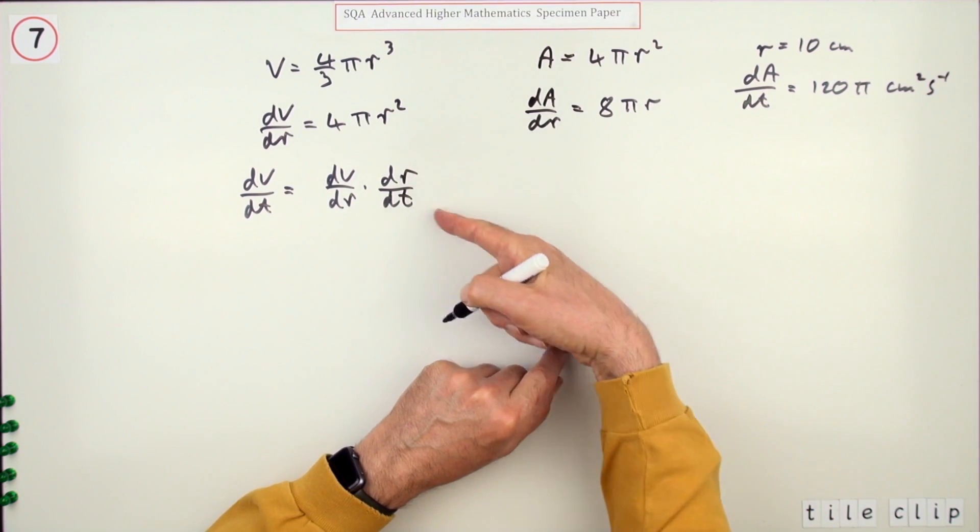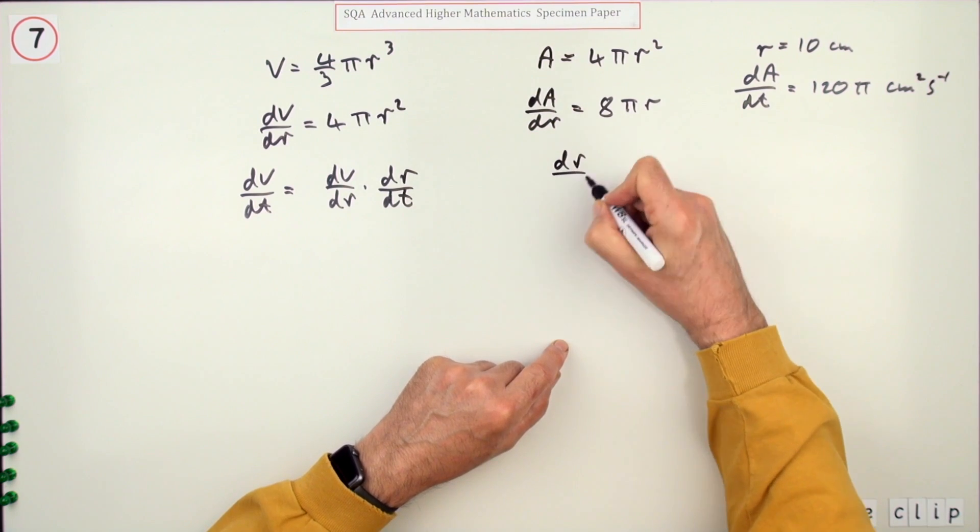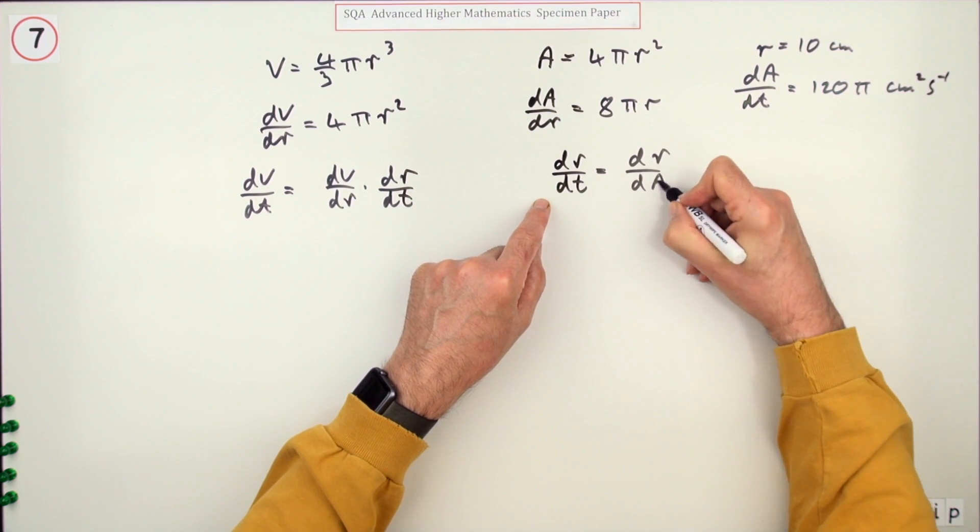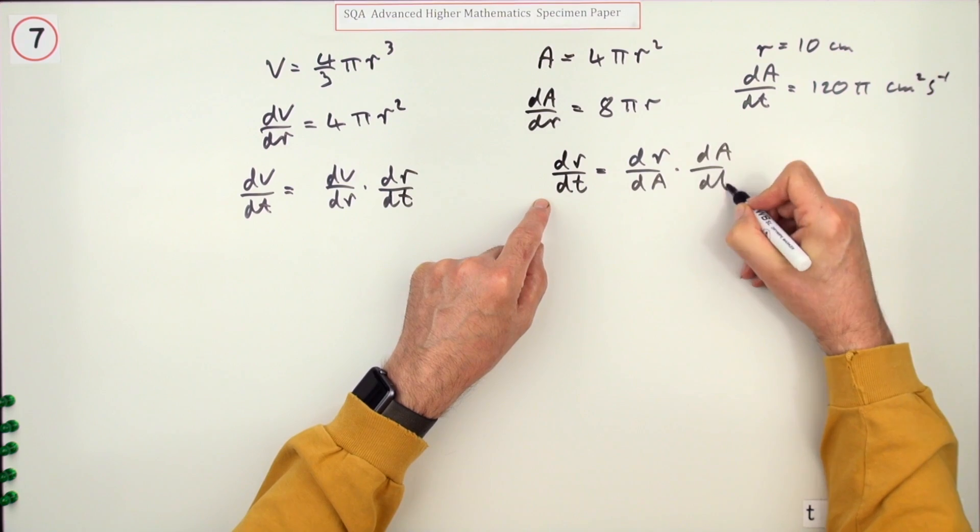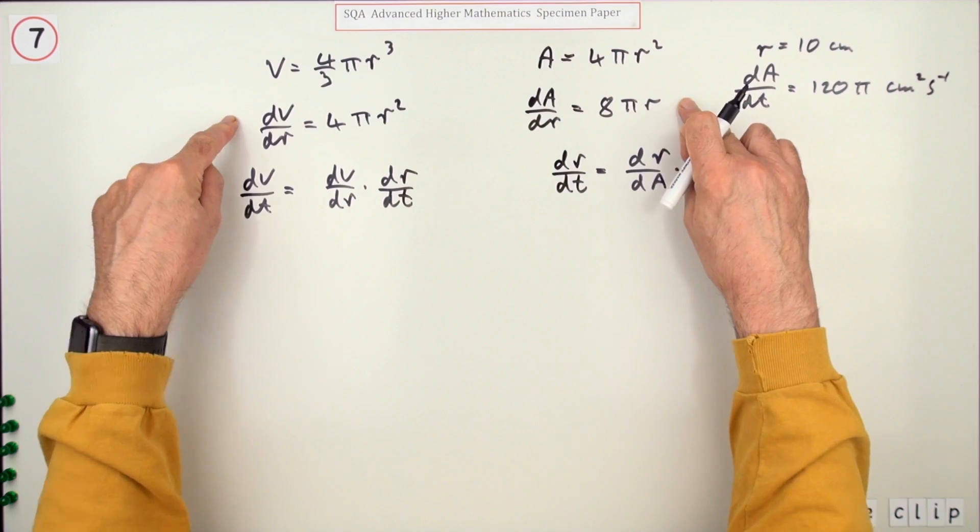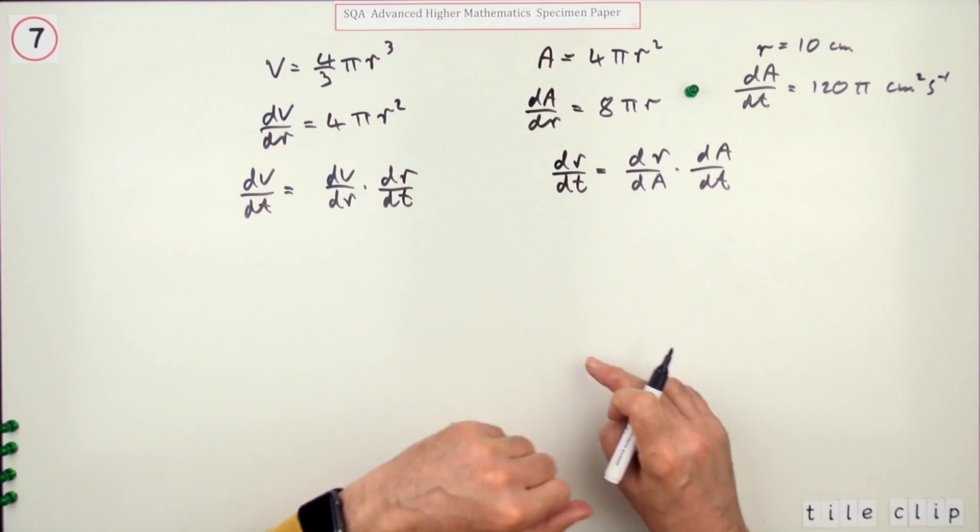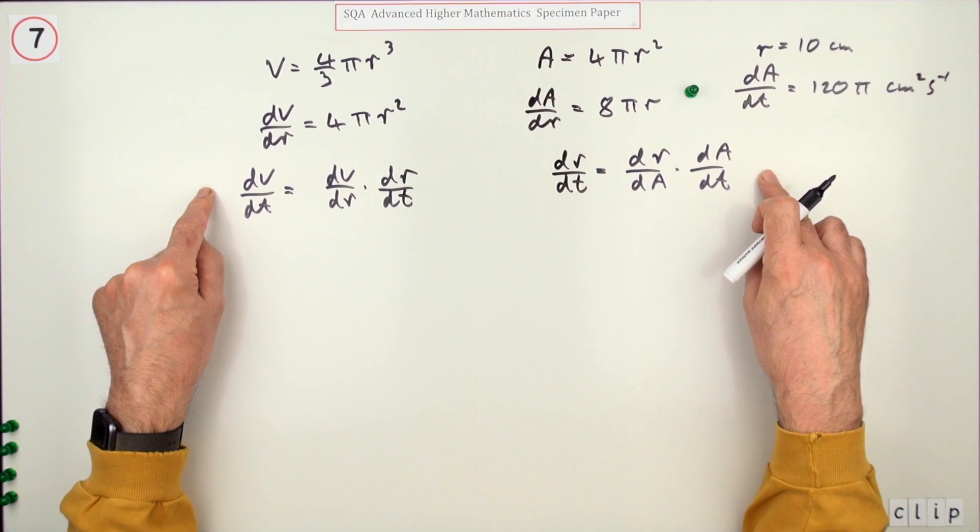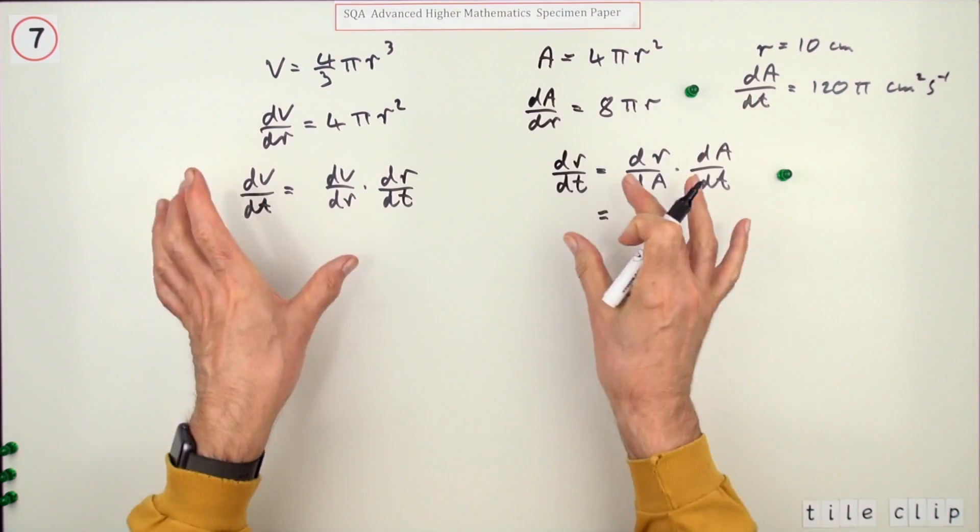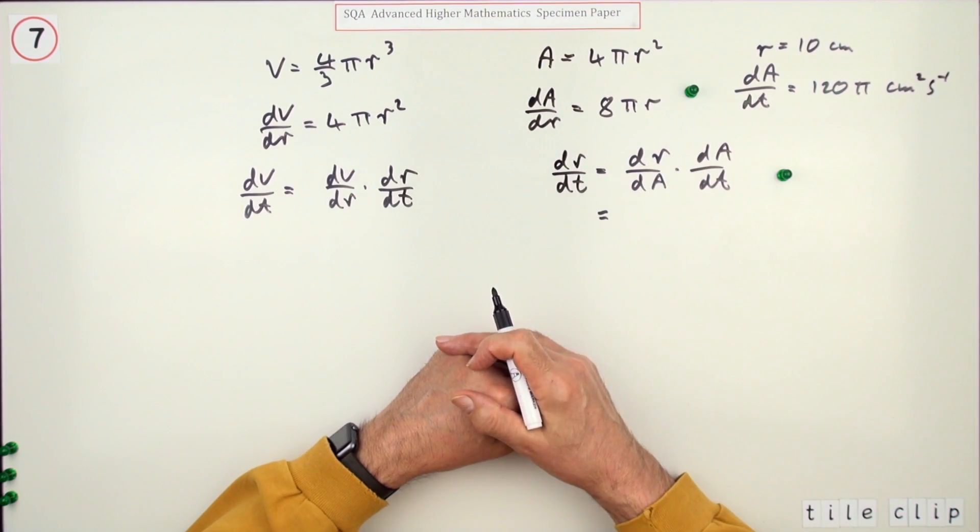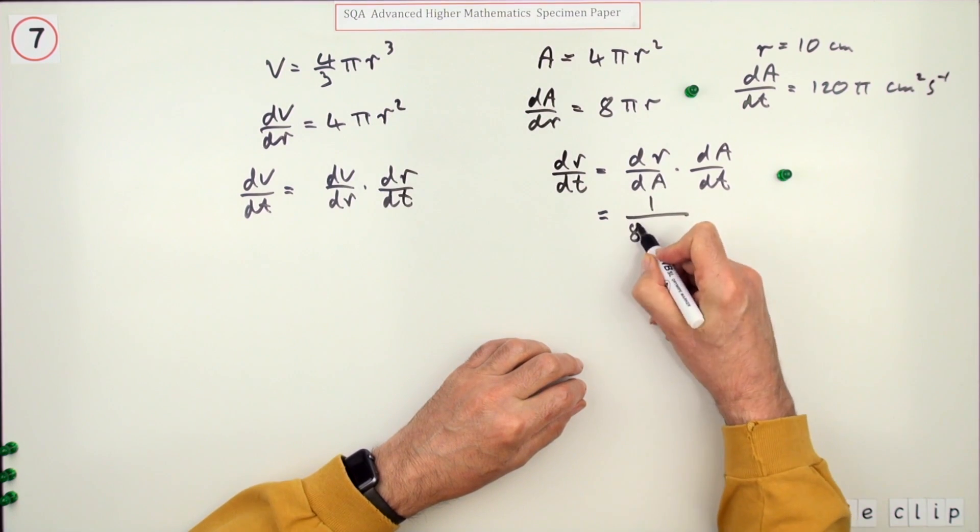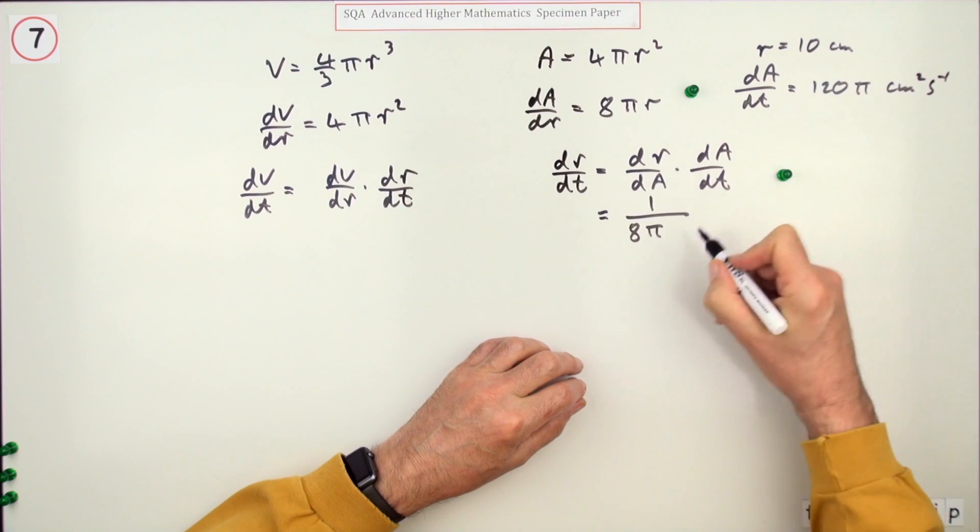Rearranging differentials is worth a mark. I know dr/dA is the reciprocal, so that's 1/(8πr). With r = 10, that's 1/(80π), and dA/dt = 120π. The π's cancel, the 10s go, giving 120/80 = 12/8 = 3/2.